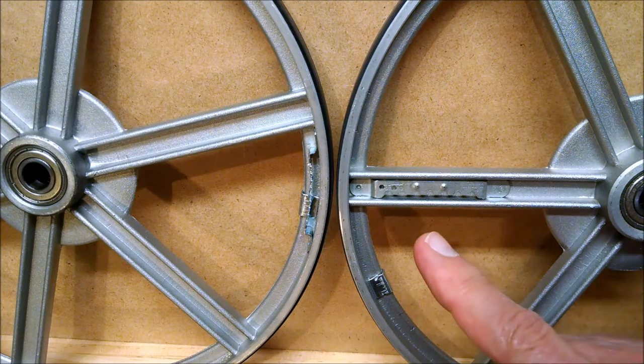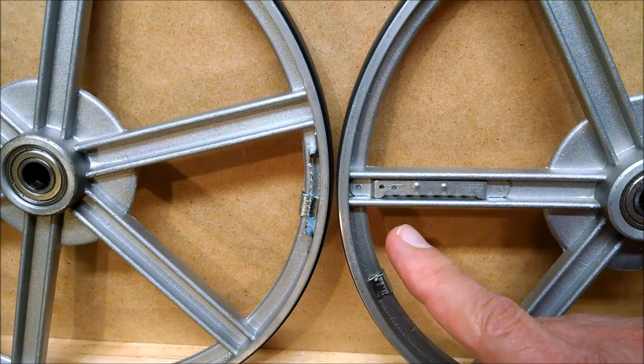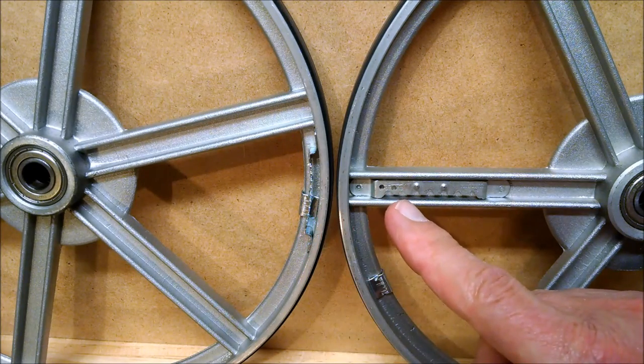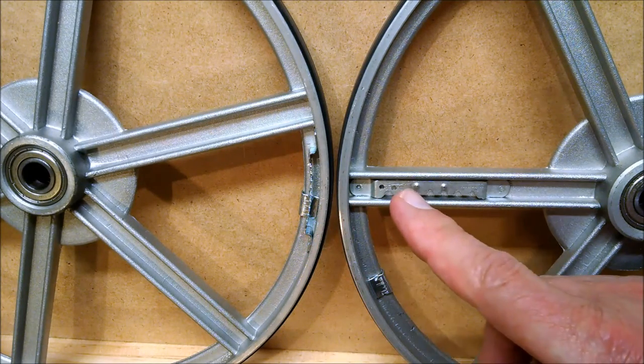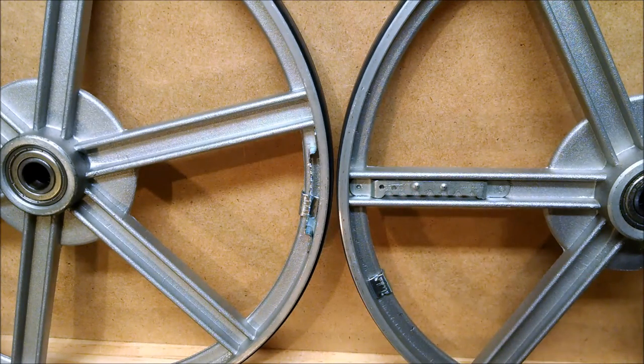I then rebalanced the wheels by using more permanent weights. I used an epoxy glue to mount a picture hanging bracket to each rim. I fine-tuned the weights by grinding off teeth or drilling small holes. The result is an almost vibration-free bandsaw.